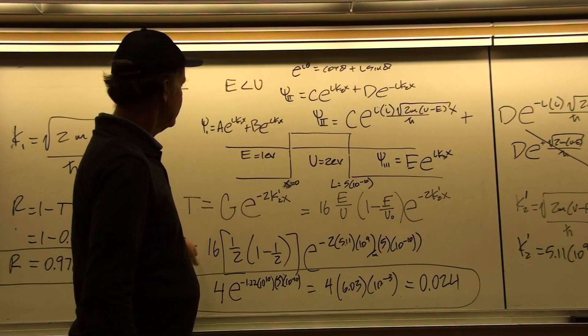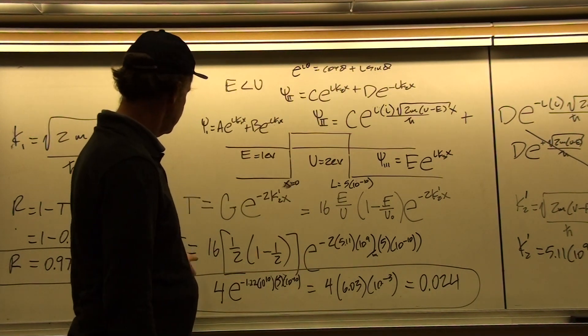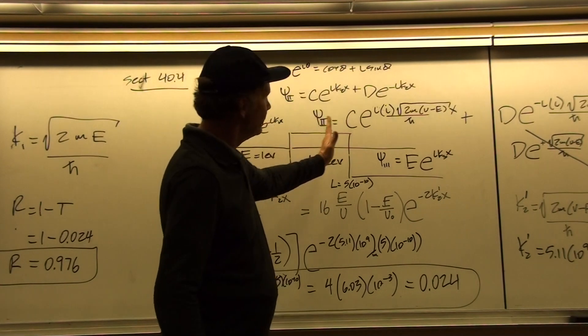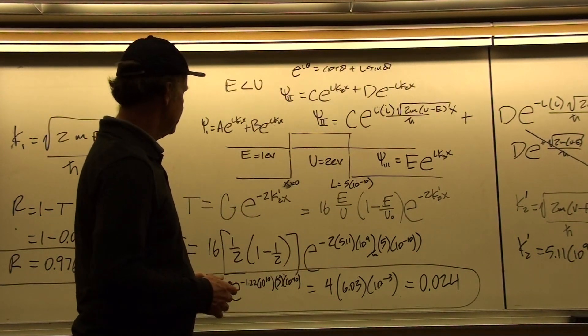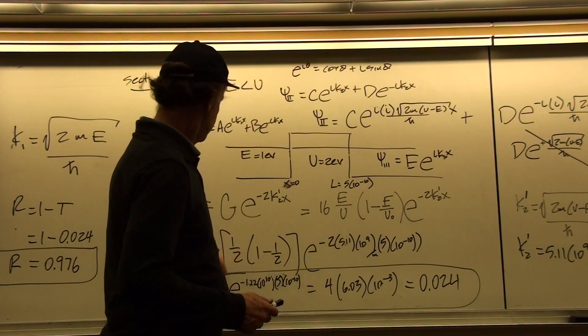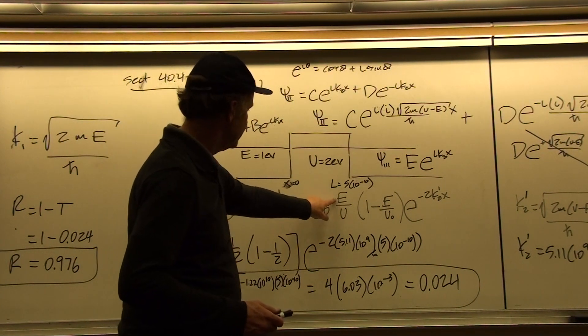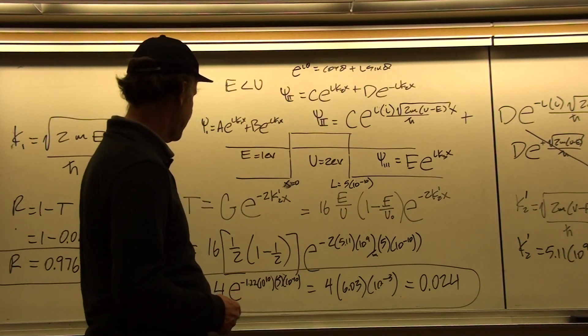So with the transmission coefficient, e equals 1 eV and u equals 2 eV, the probability of making it across a barrier that is classically forbidden is equal to, well this thing, 16 times e over u is 1 half, 1 minus e over u is 1 minus 1 half again,